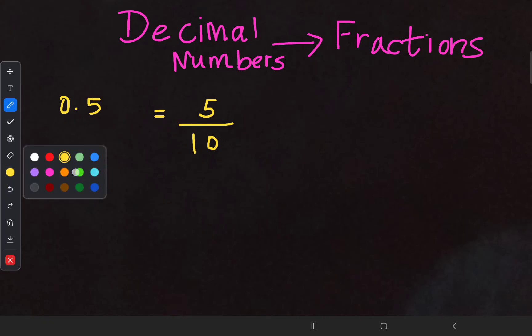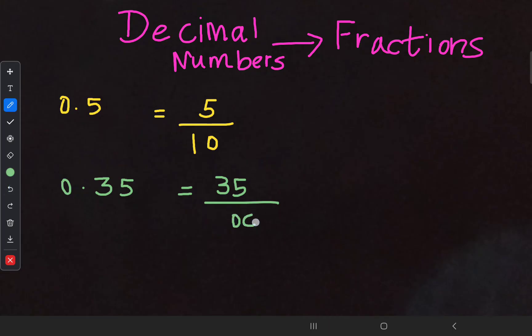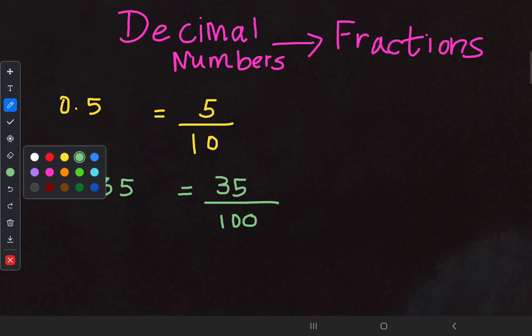Let's do one more example: 0.35. The numerical value is 35, so write 35 on top. In the denominator, count how many digits are after the decimal point — here you can see two digits, so the denominator should hold two zeros. Put a one before those two zeros: 35/100. That's all.